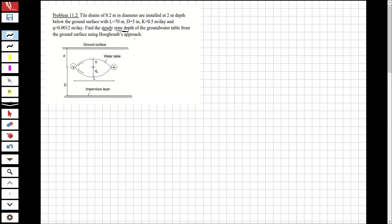So let's solve it. First we are going to need a d over l ratio. d is this length, l is this length. The d over l ratio is equal to 5 over 70, which is equal to 0.071.